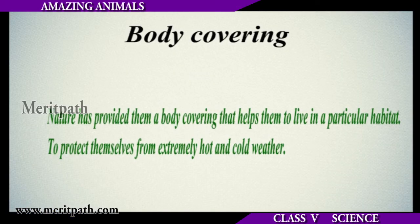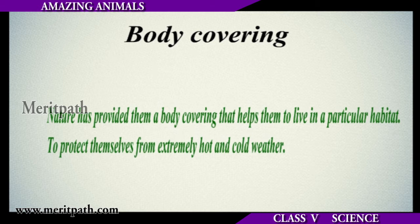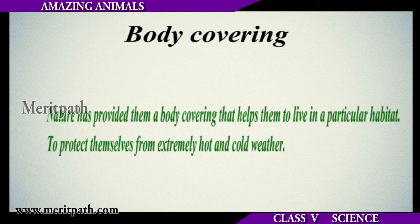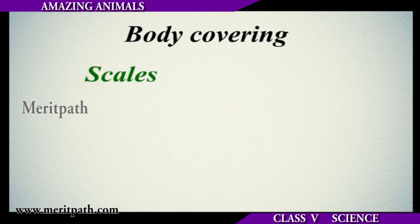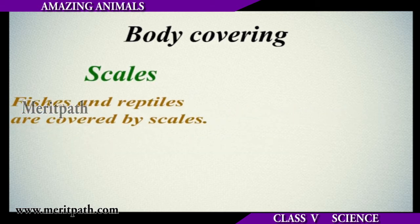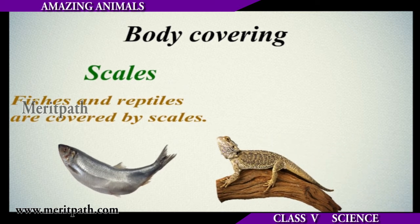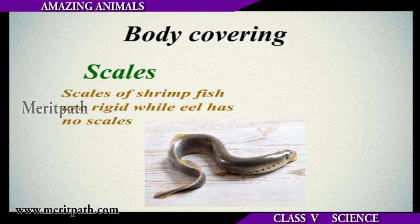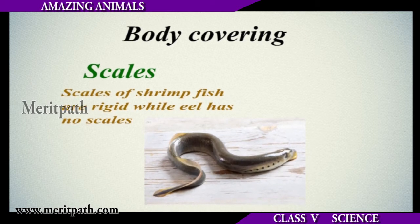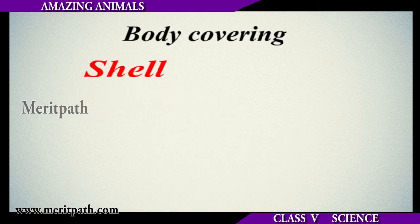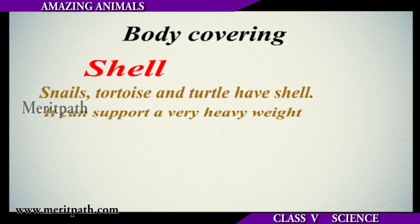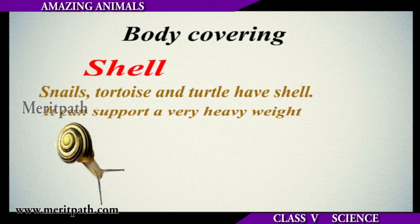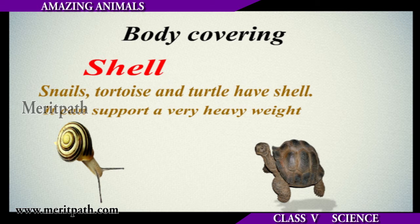Many animals can protect themselves from weather conditions or other animals because of the naturally protective covering of their body. Fish and reptiles have scales which act as their outer protection. Snails and turtles have a thick outer shell which protects them from other animals and can support a very heavy weight.